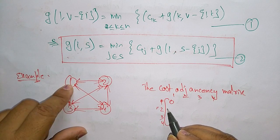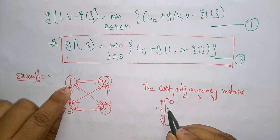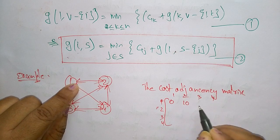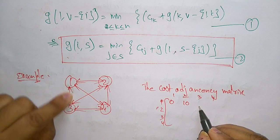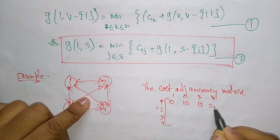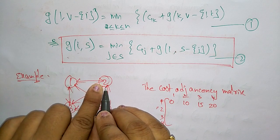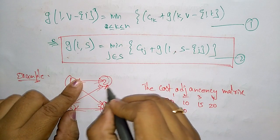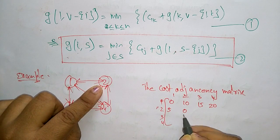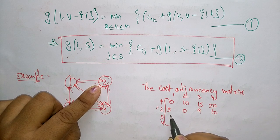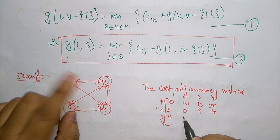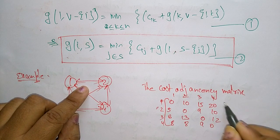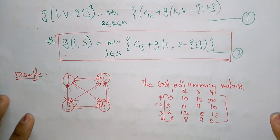From vertex one to vertex two, the cost is 10; from one to three, it is 15; from one to four, it is 20. Starting from city two: cost from two to one is 5; same city is zero; and so on. This is the adjacency matrix for the given graph.